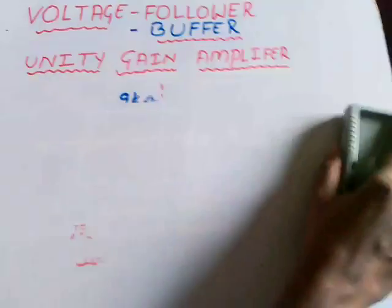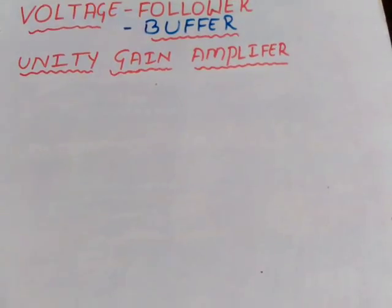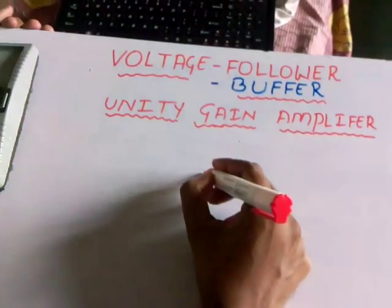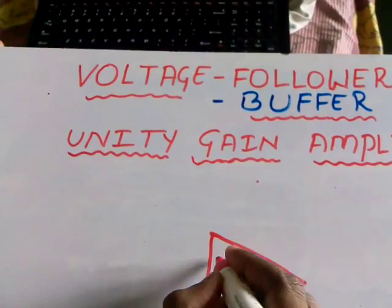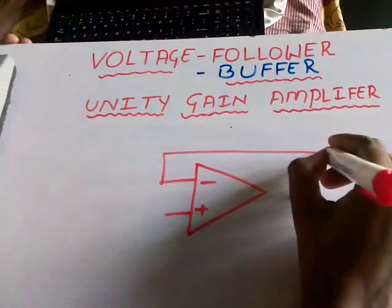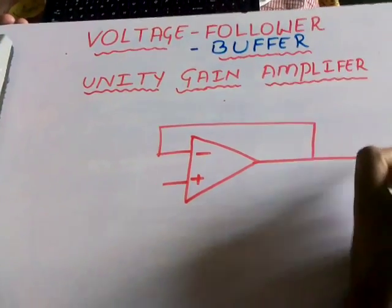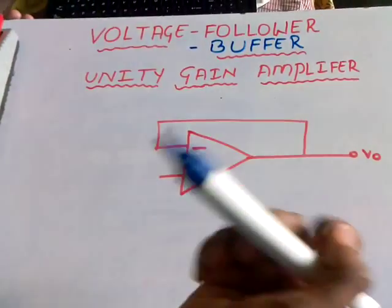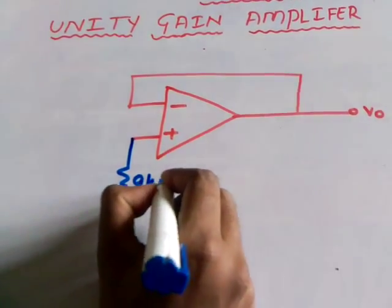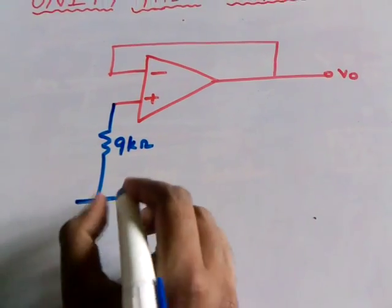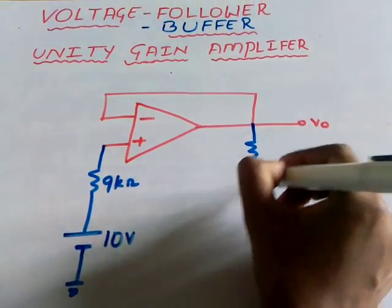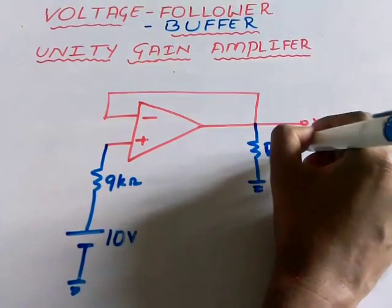So, in order to overcome this problem, we use buffers. Let me construct the same problem by using an operational amplifier. The op-amp has a minus and plus terminal, with an output V0. The same circuit is represented here — this is the source resistance of 9k ohm, and this is the voltage source providing almost all 10 volts, and this is our load resistance RL, that is equal to 1k ohm.